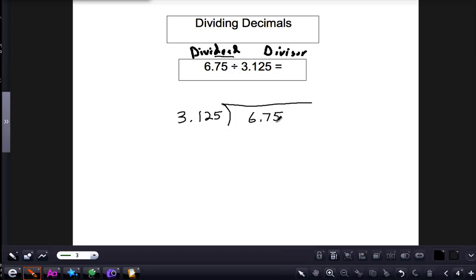Now, 6.75 is divided by 3.125. When you're dividing decimals, the divisor cannot have a decimal in it. So we can go ahead and move that decimal point three places to the right, which is like multiplying it by a thousand.